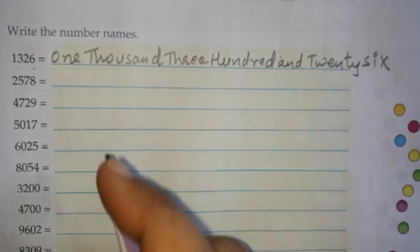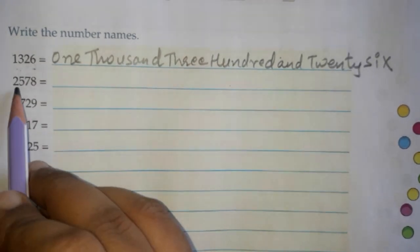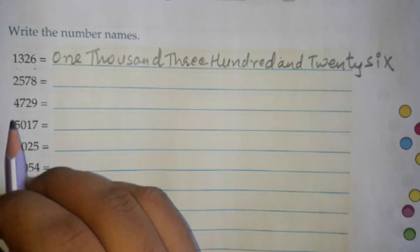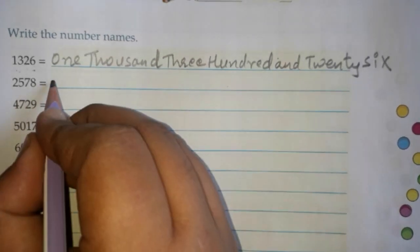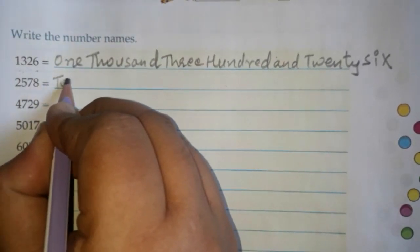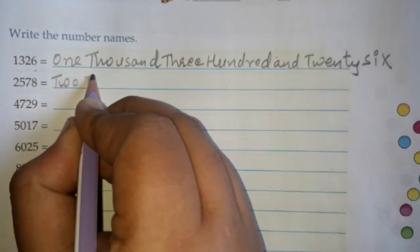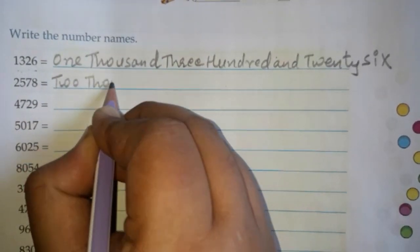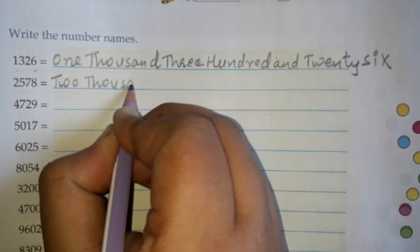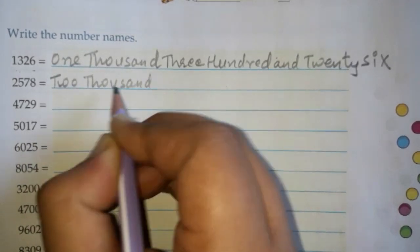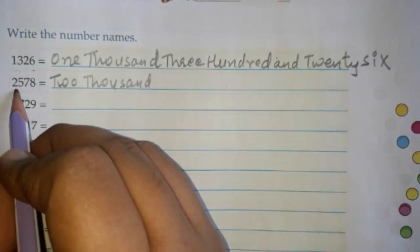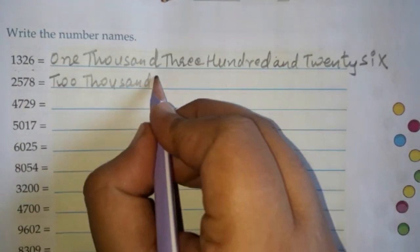Next is 2,578. 2 is on the thousands place, so we write two thousand. 5 is on the hundreds place.